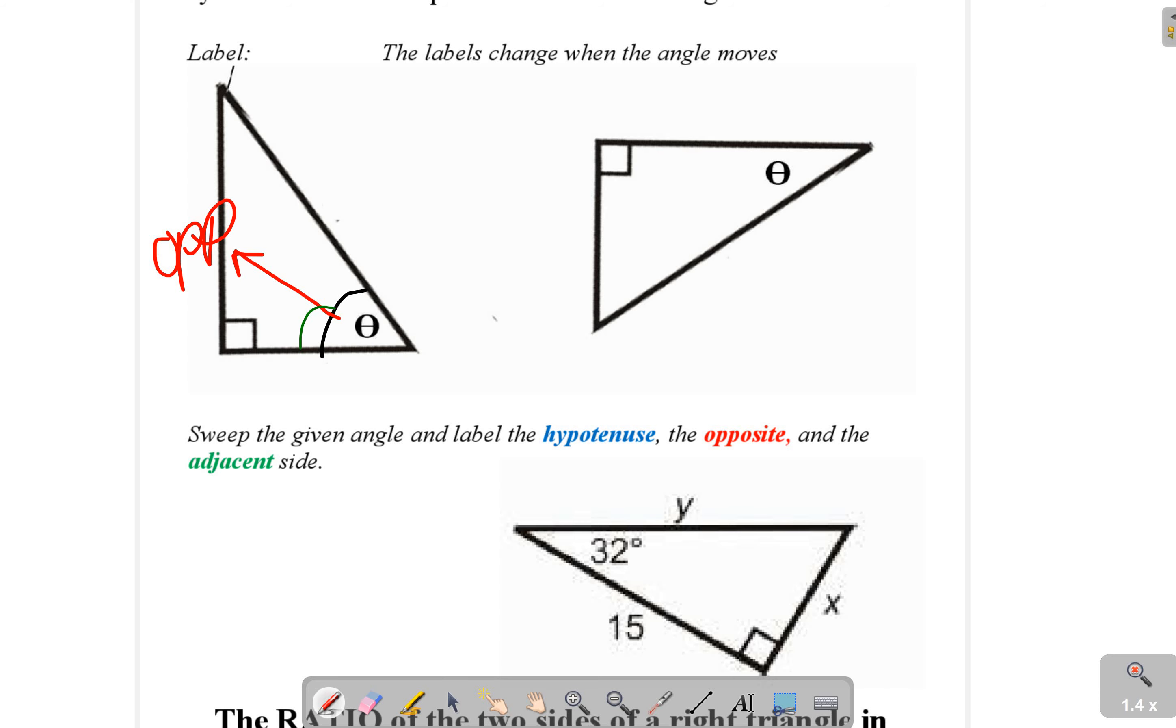The side next to it that's not the hypotenuse is called the adjacent, and of course the right angle side across from the right angle is the hypotenuse. What's super important that you understand is that when the theta moves, when the angle moves, the opposite and adjacent can change.